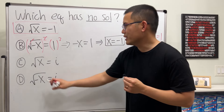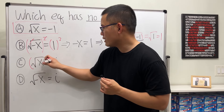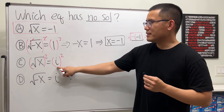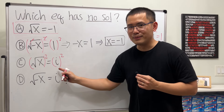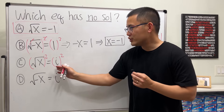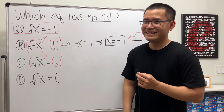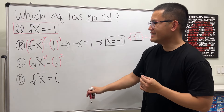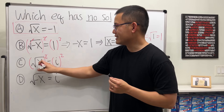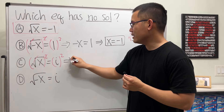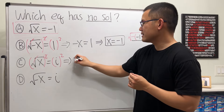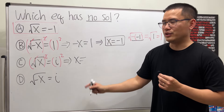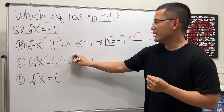For the next one, square root of x equals i. Yes, we can still square both sides. This is an imaginary number — it's not negative, it's not positive. But we can still square both sides, and we get x equals i squared, which by definition is negative 1.